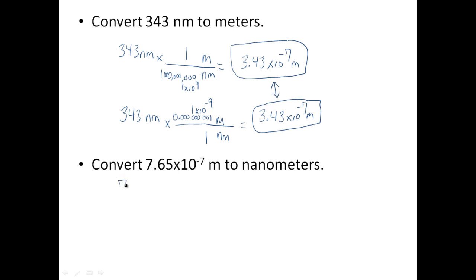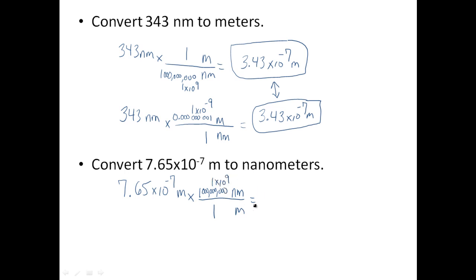Now we're going to start with meters and convert to nanometers. Let's say you do your speed of light calculation, you get meters as your final answer, and the question asks what is it in nanometers. You have to do some conversions. You're going to start with meters on the bottom, nanometers on top, and ask yourself what you know. One big meter is equal to a lot of these little nanometers, or one times ten to the ninth nanometers. When you do the math, you end up with 765 nanometers.